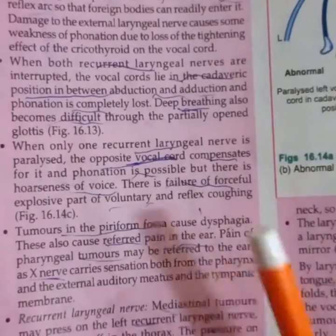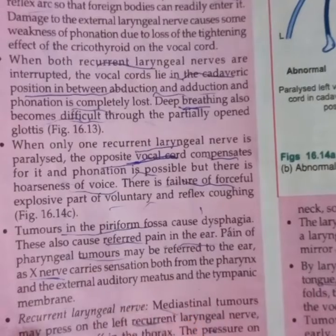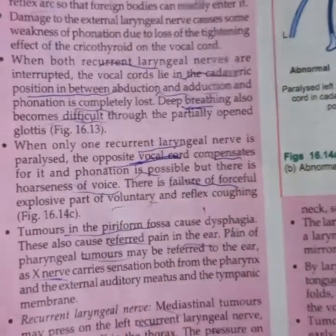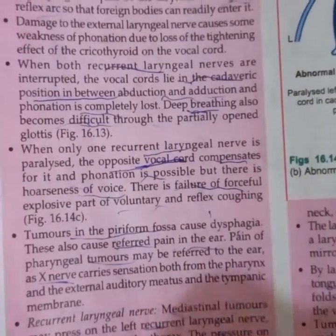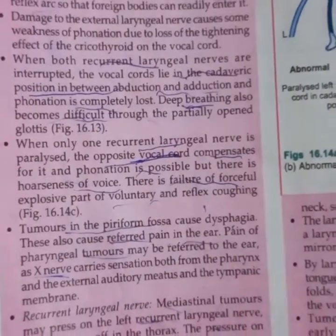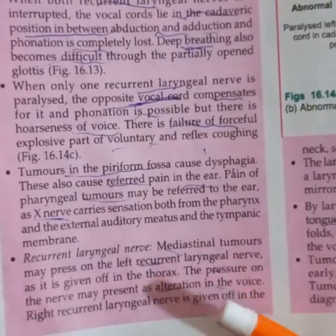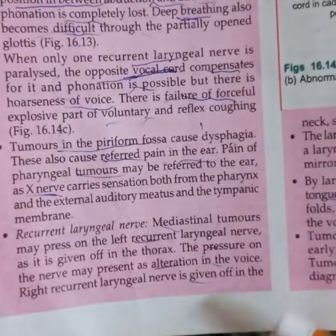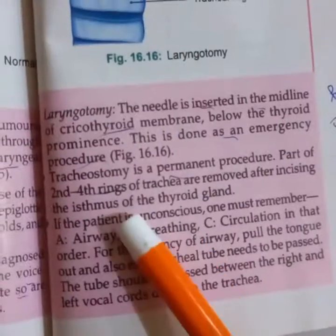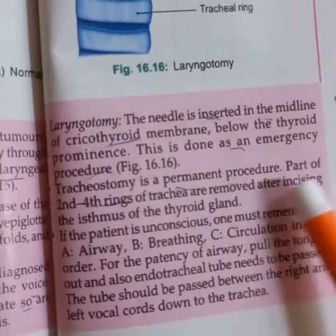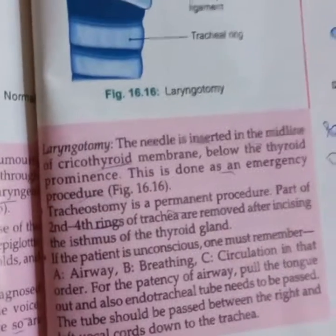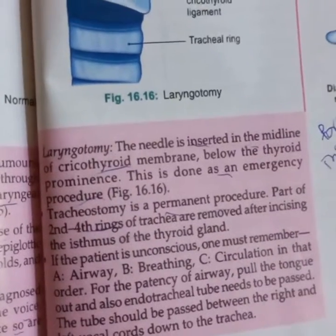A tumor in the piriform fossa may cause referred pain in the ear because the internal laryngeal nerve supplies the nerve to the stapedius. A left lung tumor may cause pressure on the left recurrent laryngeal nerve, altering the voice. A right-sided mediastinal tumor affects the right recurrent laryngeal nerve. Tracheostomy is a procedure in which we remove rings from the 2nd to 4th tracheal ring.